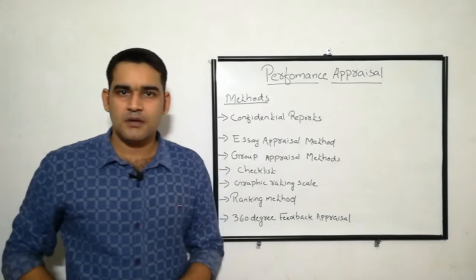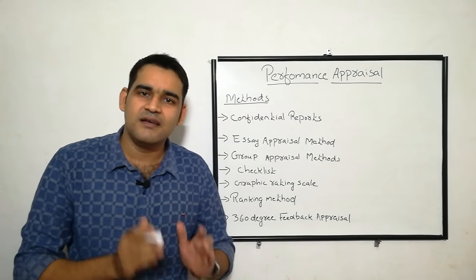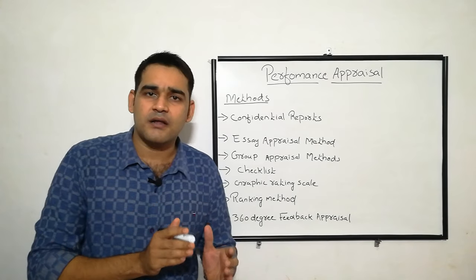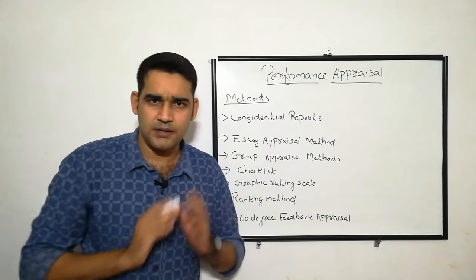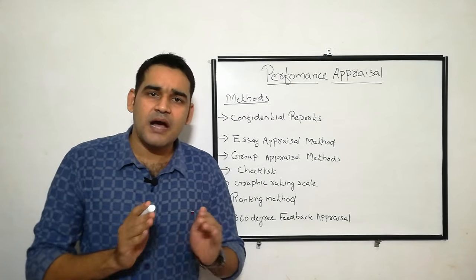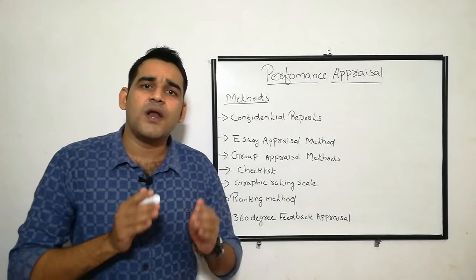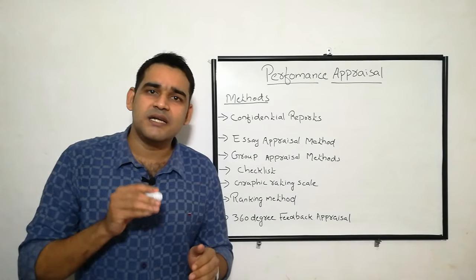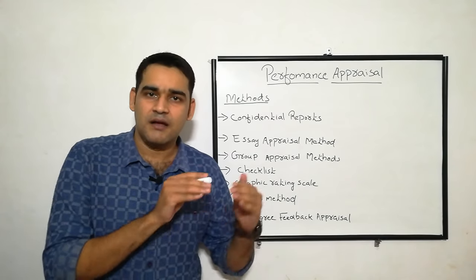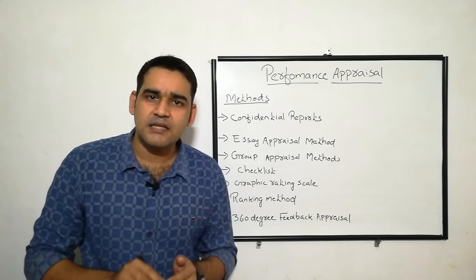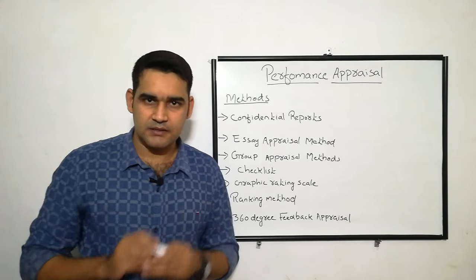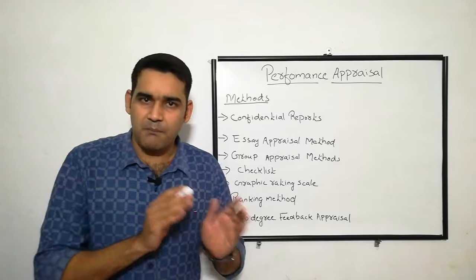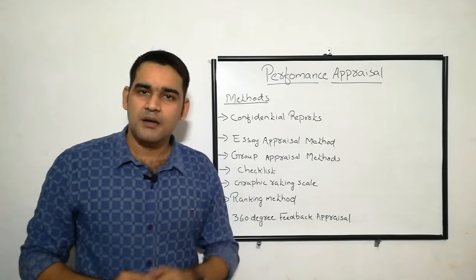First one is confidential report. Confidential means it is a secret report, prepared at the end of the year. An immediate superior prepares a report regarding the employee — regarding his weakness, strength, achievement, failure, and quality of behavior — written in a descriptive manner. However, feedback is not given to the employee. The superior writes the report, but the employee does not receive the feedback.